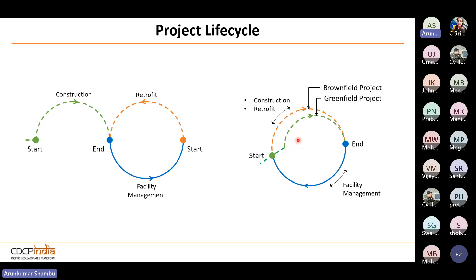If you put this in a simple graph, the first-time construction is called greenfield, and once utilities are there and certain changes are made, it becomes brownfield. That's a simple gist of what the project lifecycle is.